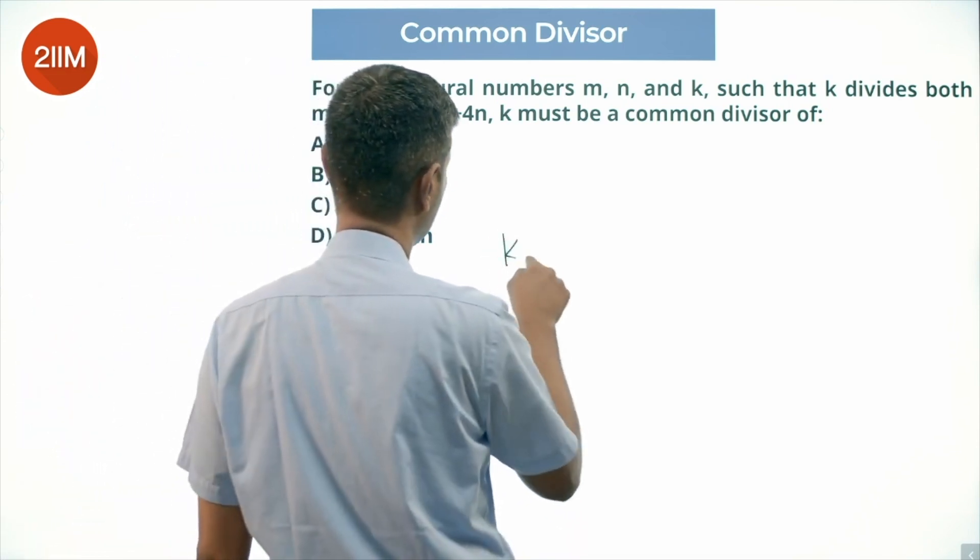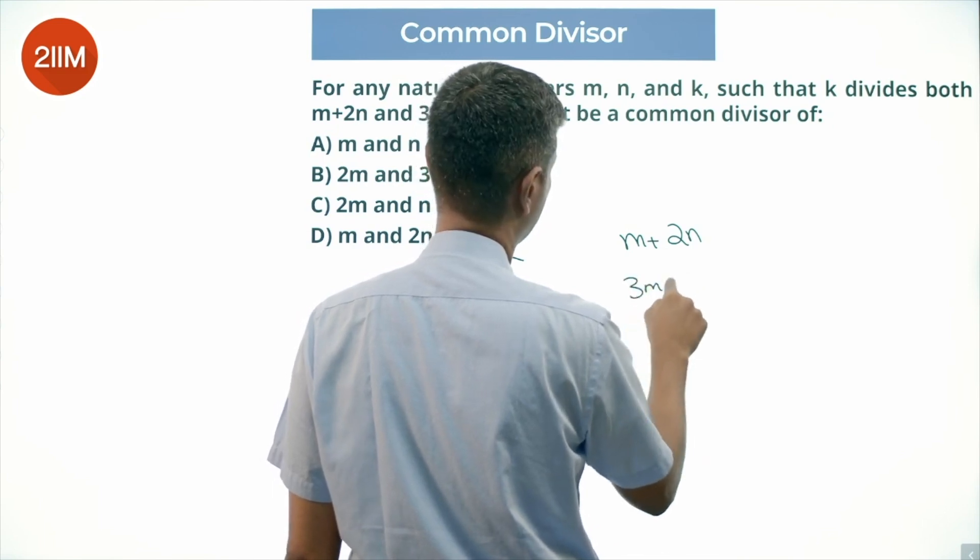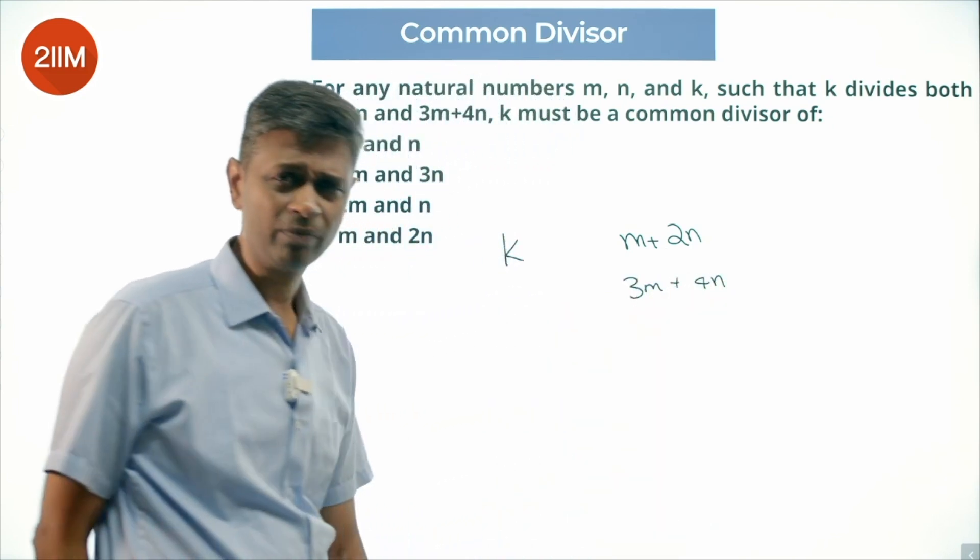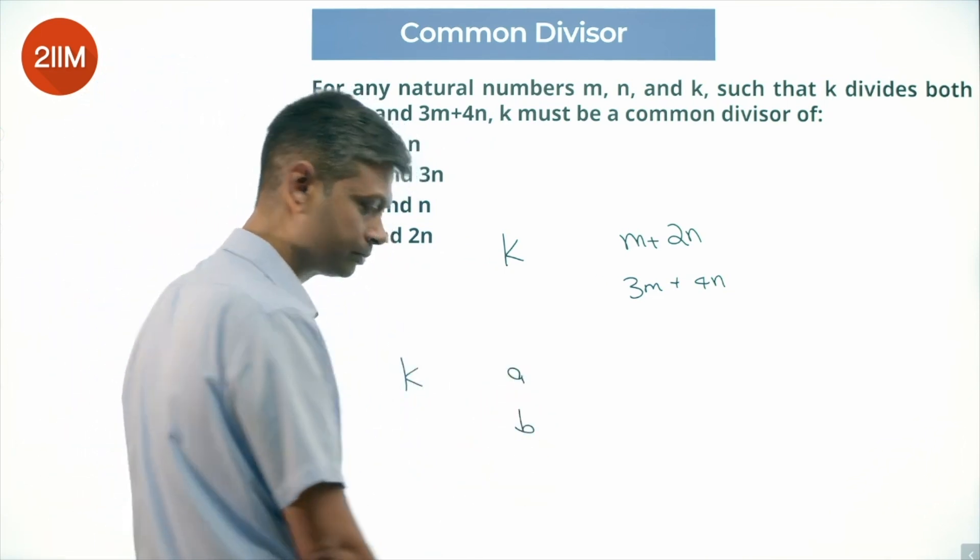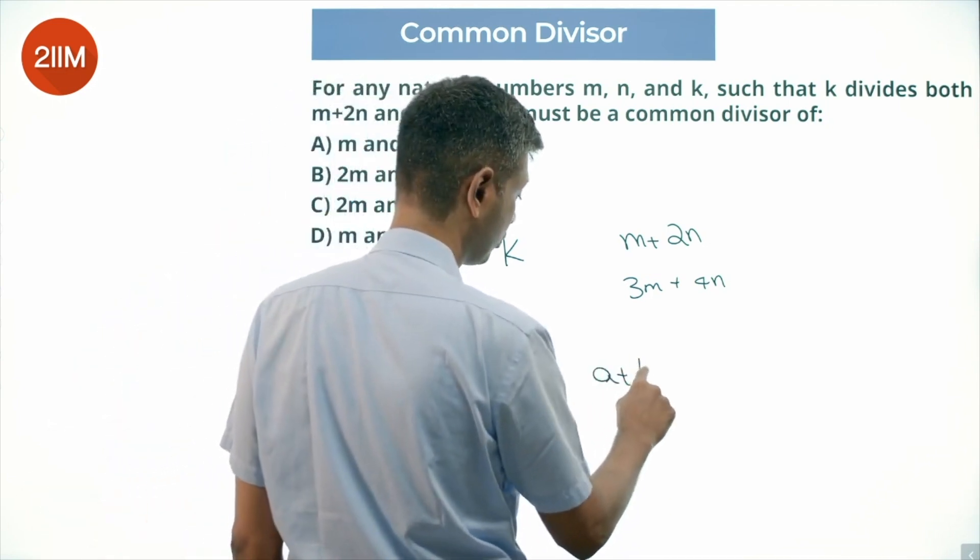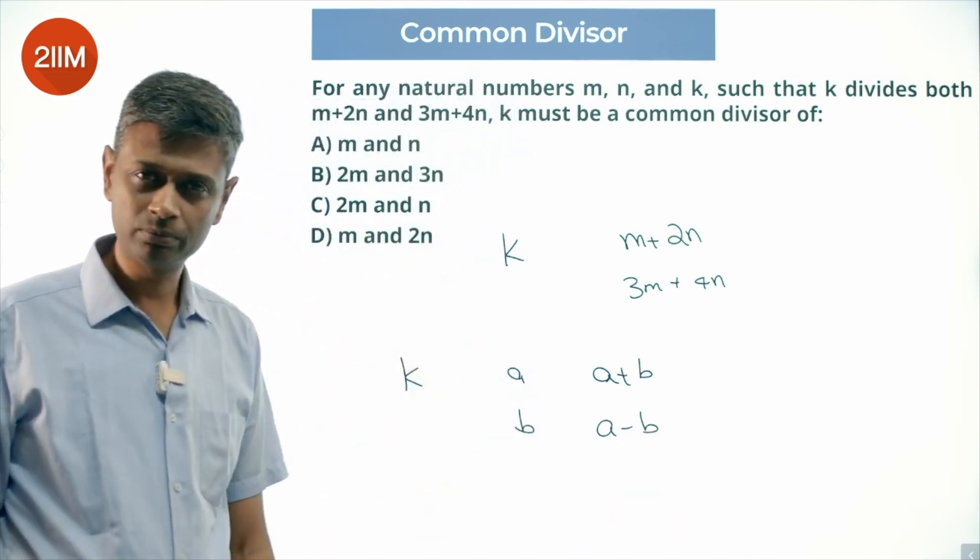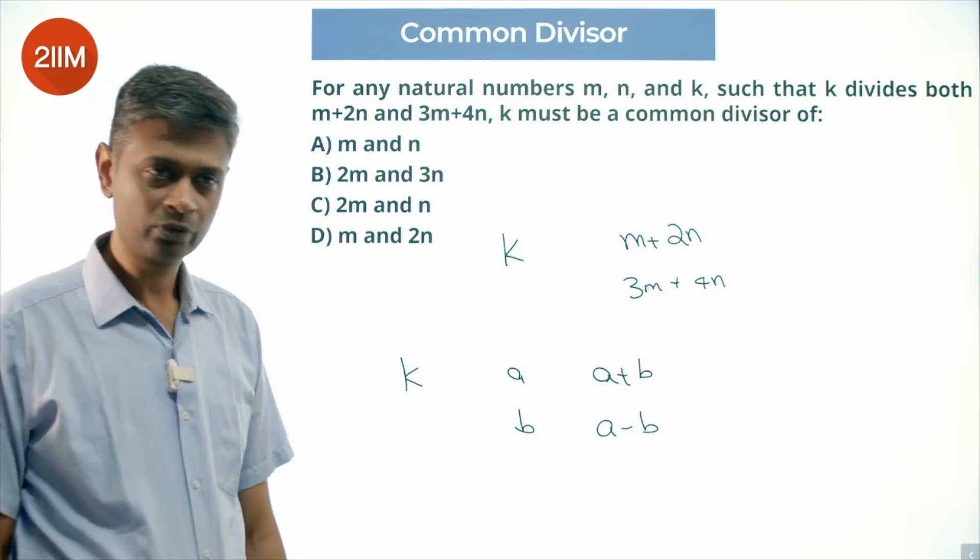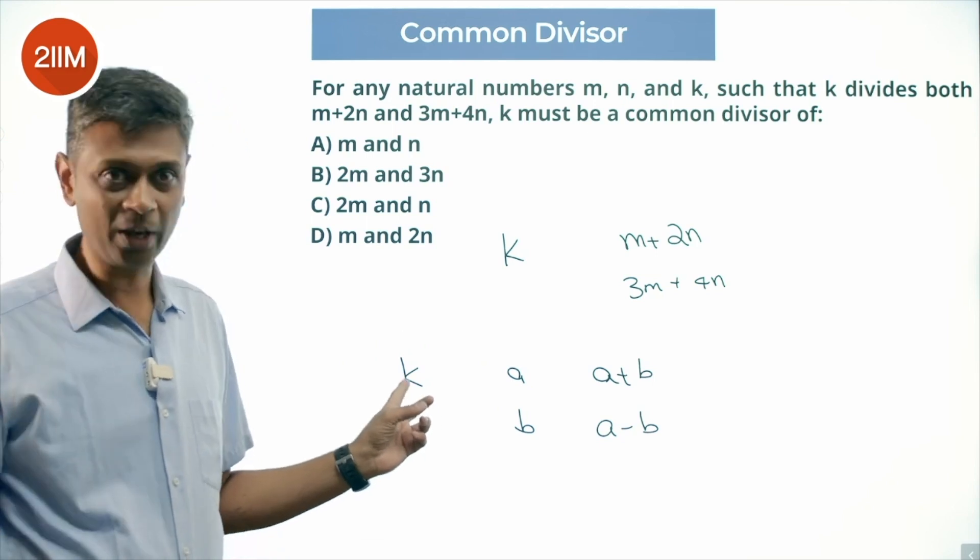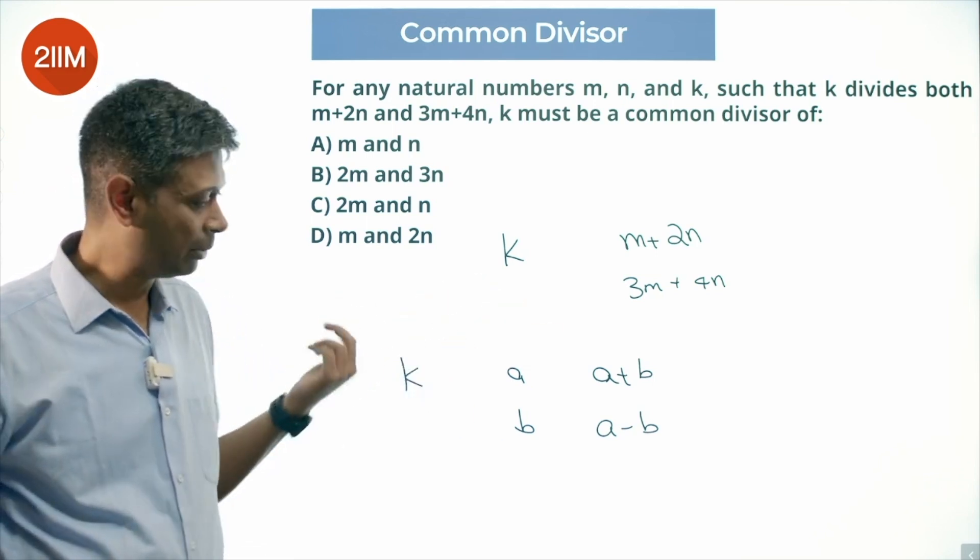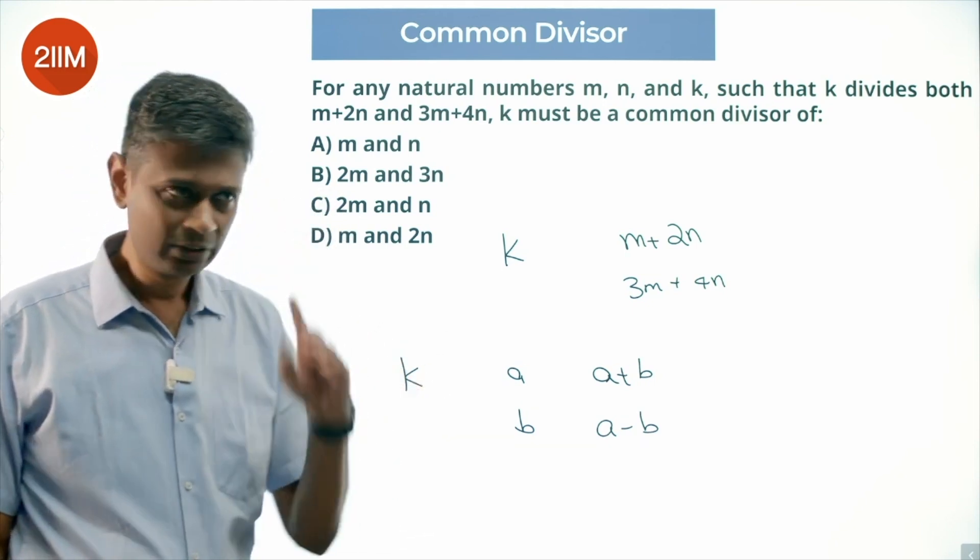So this number K divides M plus 2N and 3M plus 4N. Very interesting. If a number K divides A and B, then it will divide A plus B and A minus B. This means A is PK, B is QK. You add these two, it will be P plus Q times K. It will be P minus Q times K. It works - A plus 2B, A plus 3B, all of that we can figure out.